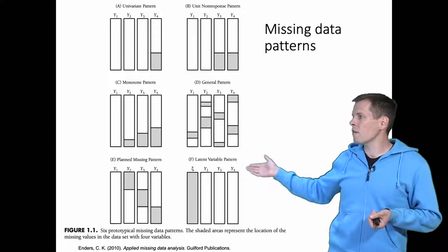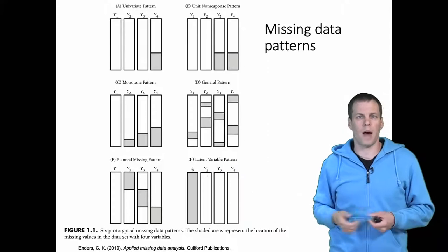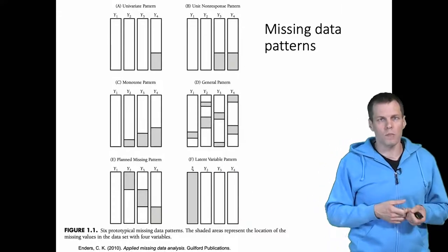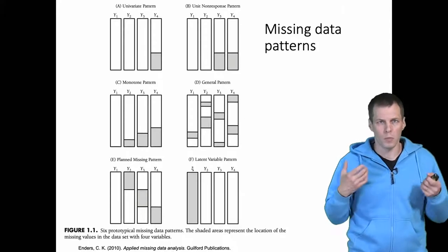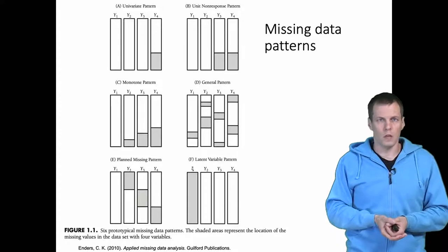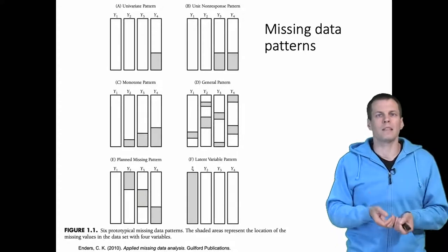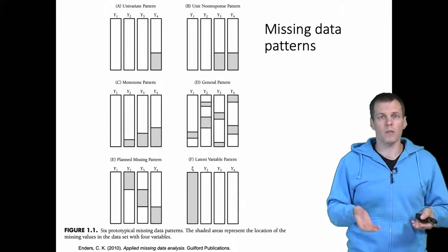Then we have two other interesting patterns. One is planned missing pattern. This is not very commonly used in management but it is fairly common in psychology where we can get large samples from, for example, schools. The idea of planned missing data pattern is that data collection can be costly.